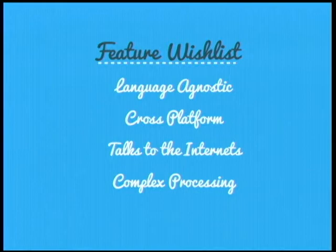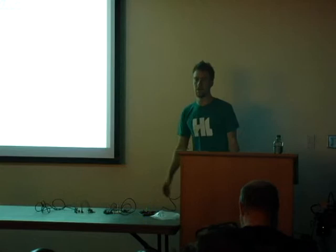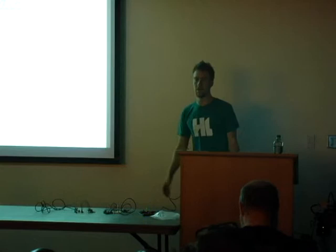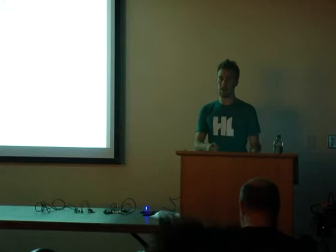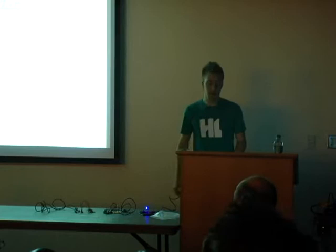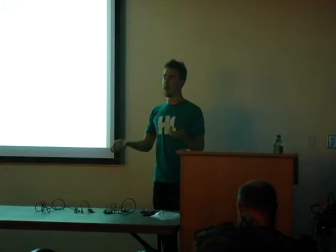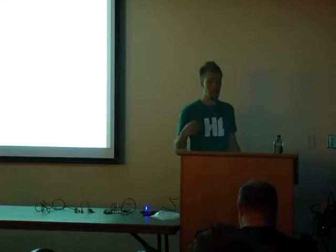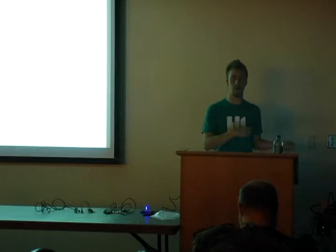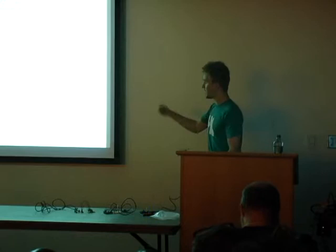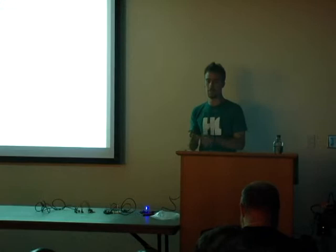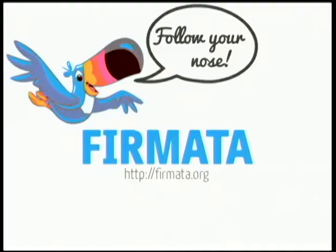Here's my ideal checklist. In an ideal world it's language agnostic — I want to write in Python, JavaScript, Ruby, whatever. I want it to be cross-platform so it runs on anybody's computer. It has to be able to talk to the internet, because making things that talk to each other on the internet is fundamental to our hacking culture. I want to do complex processing easily — storing, manipulating, displaying data. And I want to keep all the main value propositions: cheap, available, simple, open source, lots of examples. So I followed my nose, as Toucan Sam would be proud to hear.